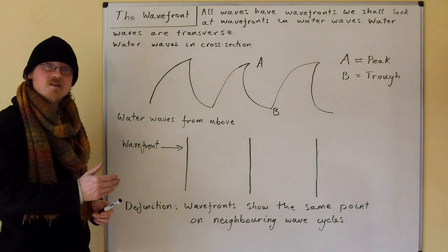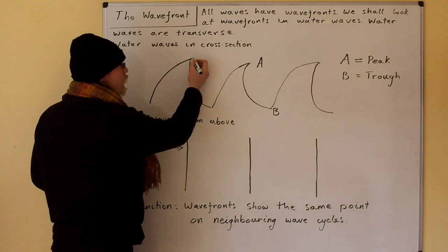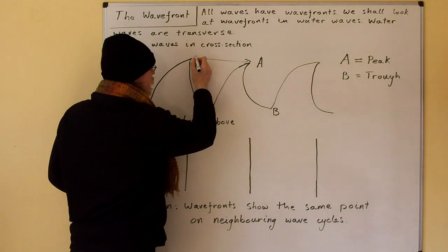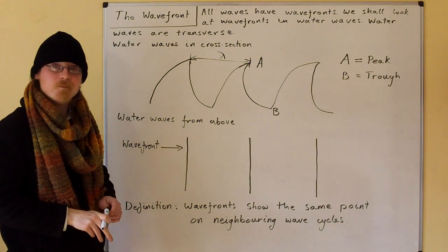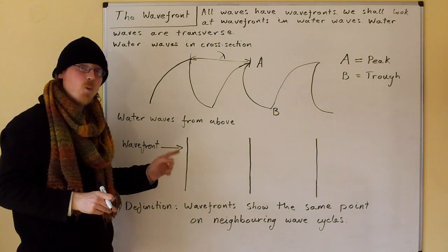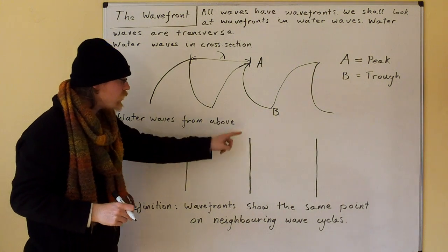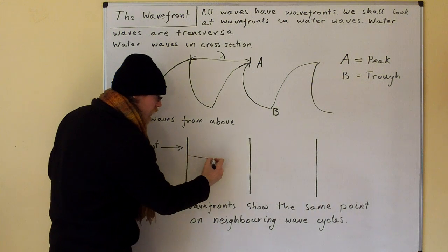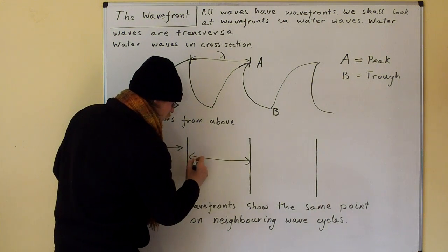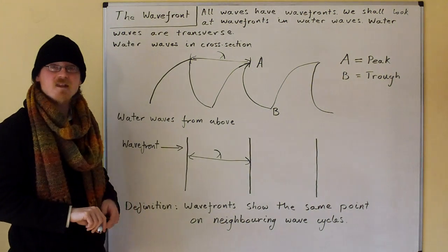Now, we know that the distance between two peaks is the wavelength lambda, and the distance between wavefronts, because the wavefronts correspond to the peaks of the waves, is a wavelength lambda.